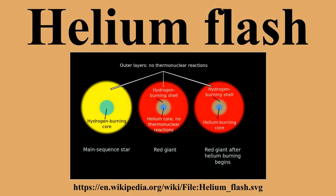Low mass stars do not produce enough gravitational pressure to initiate normal helium fusion as the hydrogen in the core is exhausted. Some of the helium left behind is instead compacted into degenerate matter, supported against gravitational collapse by quantum mechanical pressure rather than thermal pressure. This increases the density and temperature of the core until it reaches approximately 100 million Kelvin, which is hot enough to cause helium fusion in the core. However, a fundamental quality of degenerate matter is that changes in temperature do not produce a change of volume until the thermal pressure becomes so incredibly high that it exceeds degeneracy pressure. In main sequence stars, thermal expansion regulates the core temperature, but in degenerate stars this does not occur.